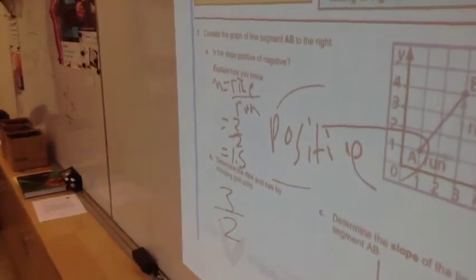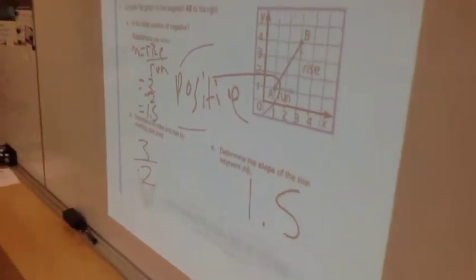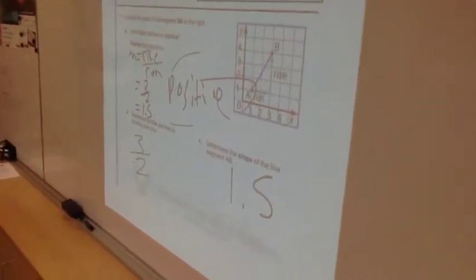And is it positive or negative, the actual value once you divide out rise over run? It's positive. Nice. So we have more than one way that we can identify that. Awesome.